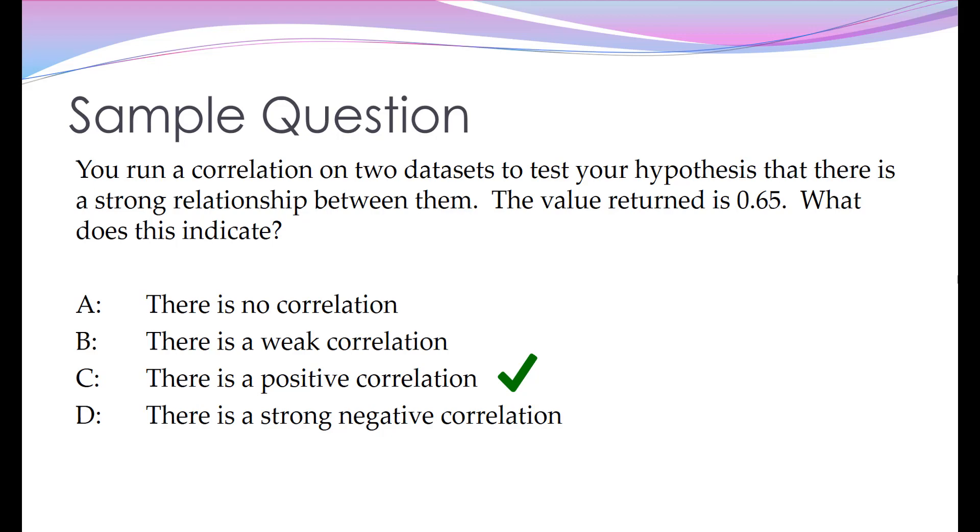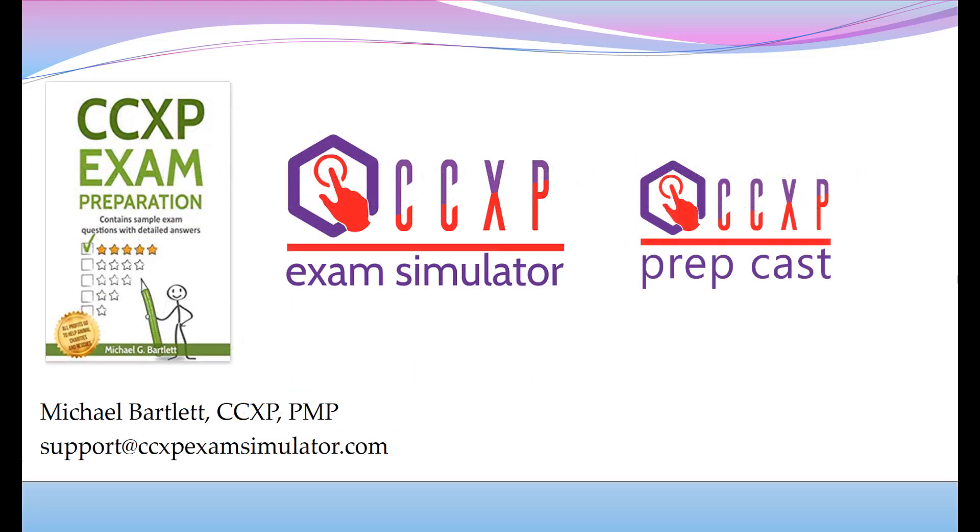And the answer, of course, is that there is a positive correlation. As I said, any number between 0.1 and 1 is indicative of a positive correlation. So I hope that was useful. I've had a few questions on that, and I know that not everybody that works in the CX world comes from an analytical background or a statistical background, so I felt it was important to cover this.